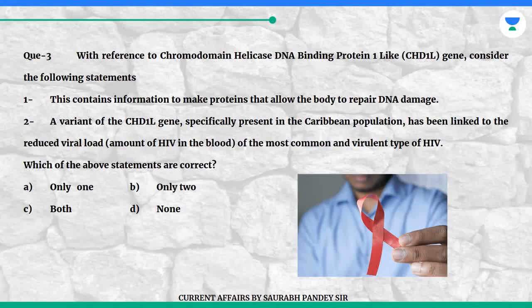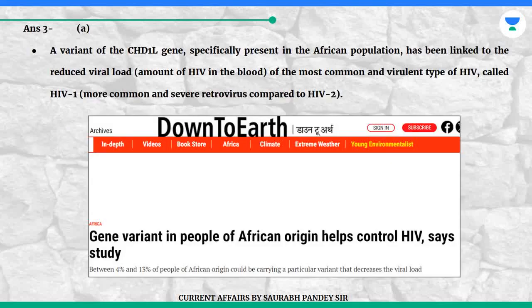Question 3: With reference to the chromodomain helicase DNA binding protein 1-like (CHD1L) gene, consider the following statements. Statement 1: This contains information to make proteins that allow the body to repair DNA damage. Statement 2: A variant of the CHD1L gene specifically present in the Caribbean population has been linked to the reduced viral load — the amount of HIV in the blood — of the most common and virulent type of HIV. Which of the above statements are correct? A. Only one. B. Only two. C. Both. D. None. Answer is A.